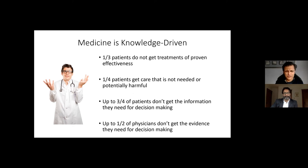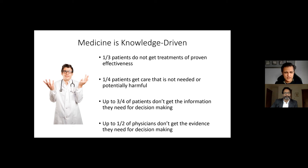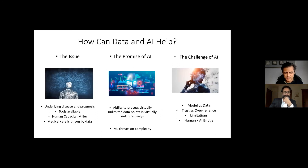There are lots of estimates around the quality of care we provide. About a third of patients do not get treatments of proven effectiveness. A quarter of patients get care that is not needed or even potentially harmful. Up to three quarters of patients don't get the information they need for decision making. And up to half of physicians don't get the evidence they need for decision making. So it's hard. What can data and AI do to help?